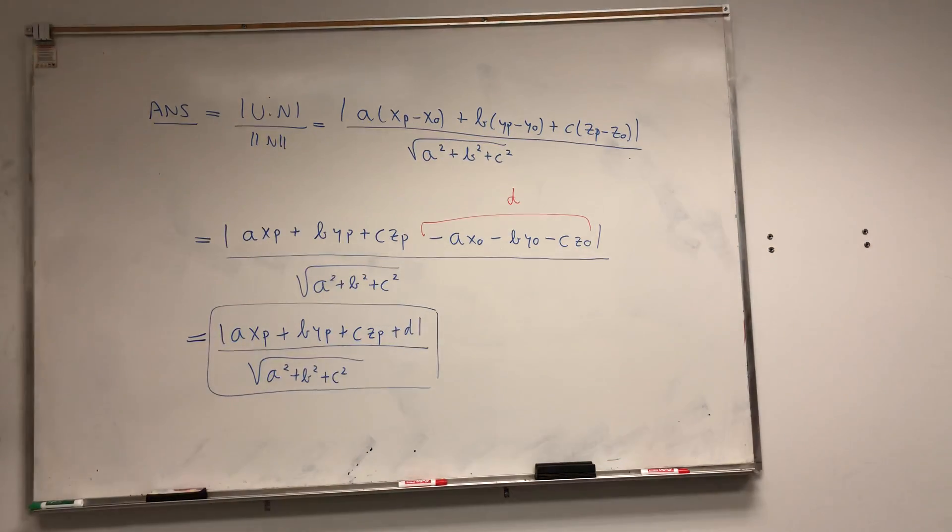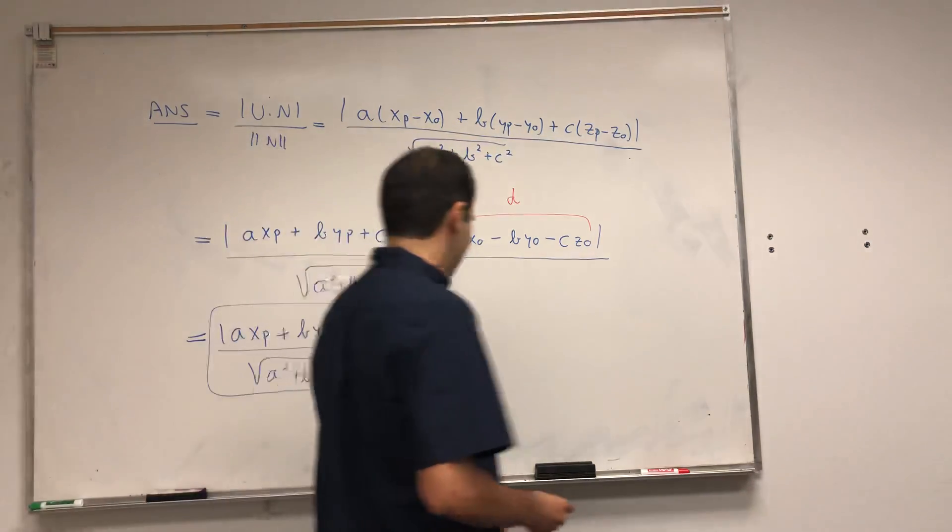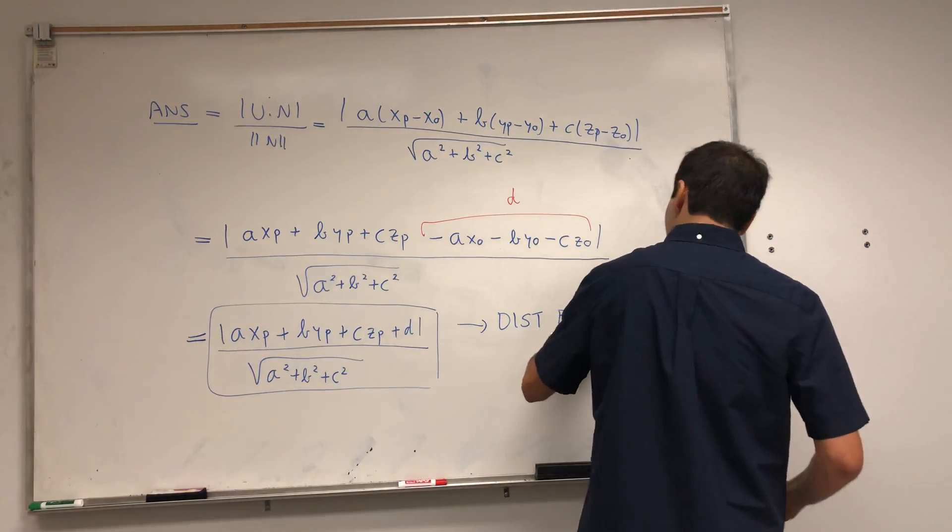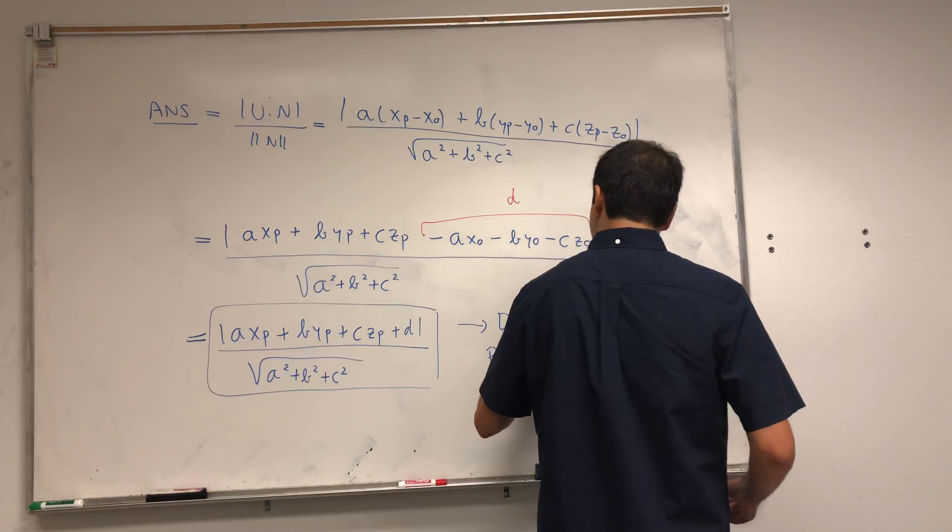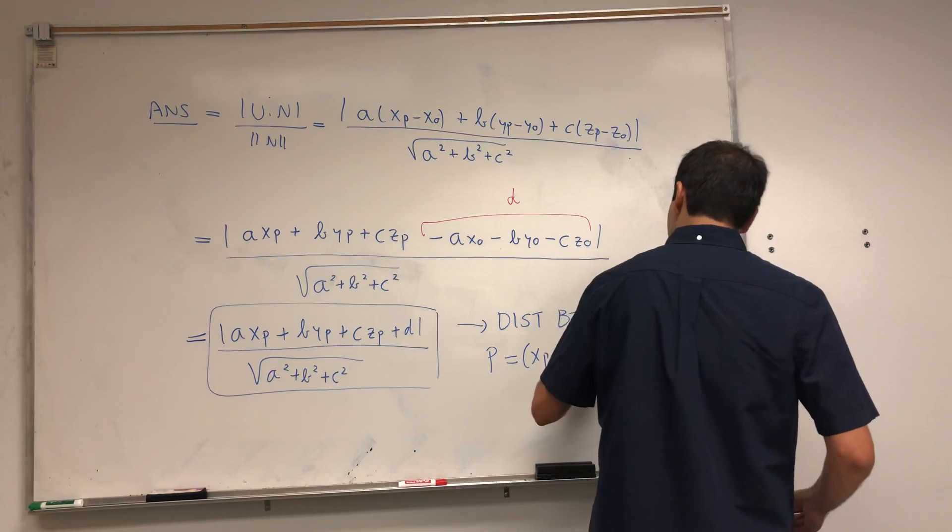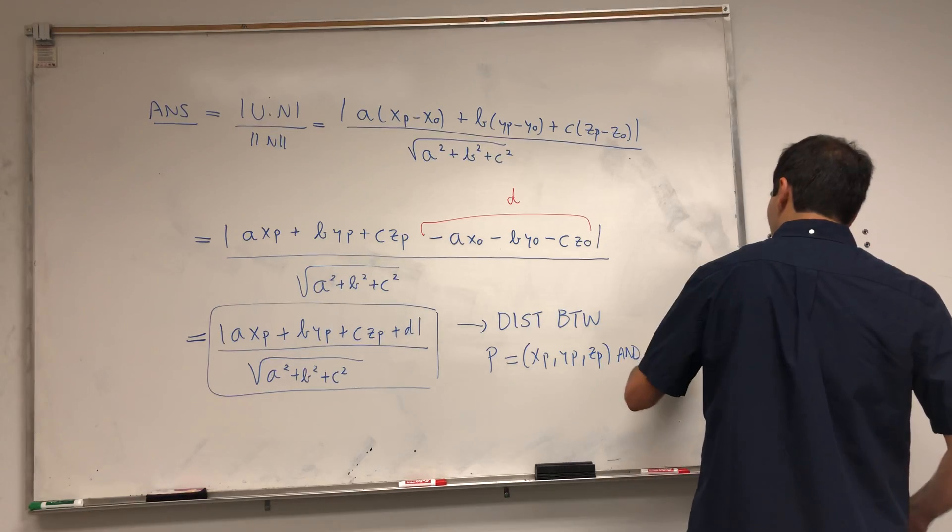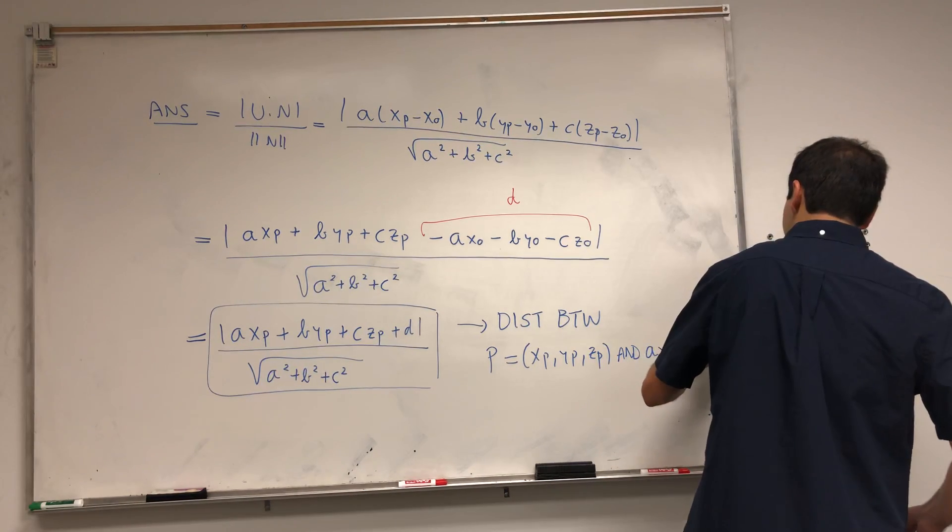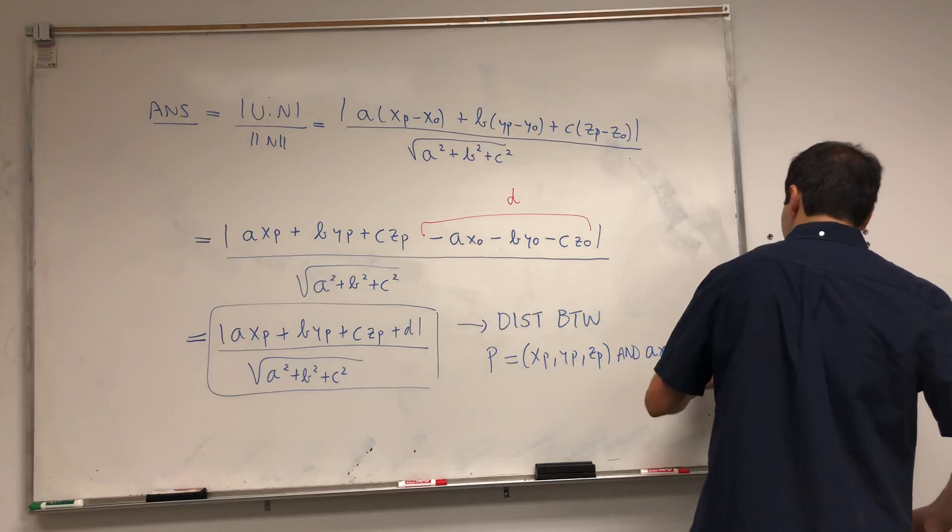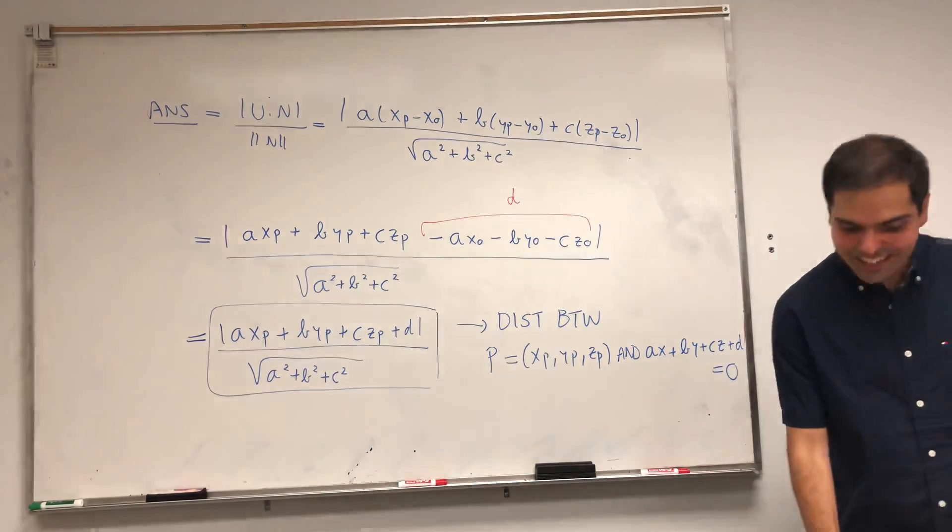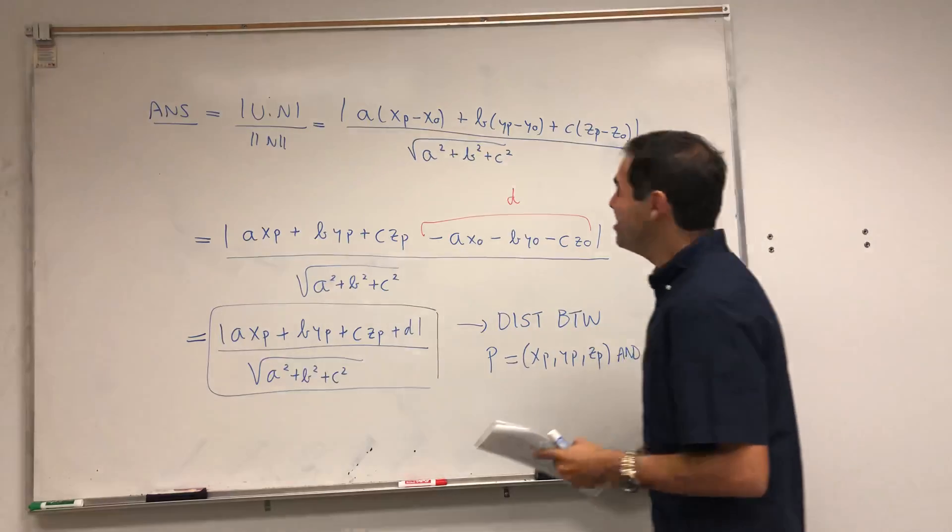And what this is, again, is the distance between a point P (xp, yp, zp) and the plane Ax + By + Cz + D = 0. So maybe let's give one example.